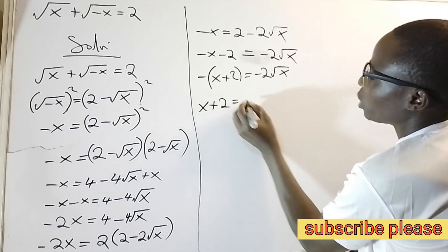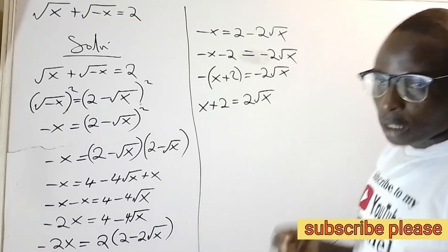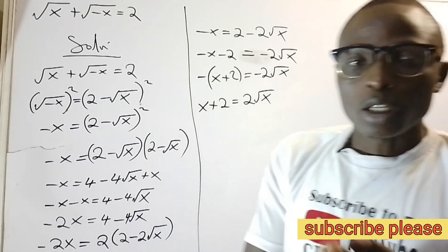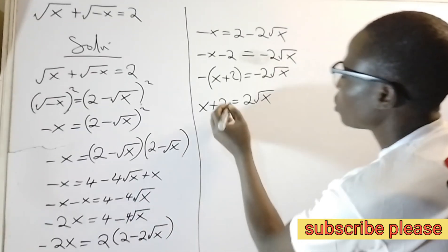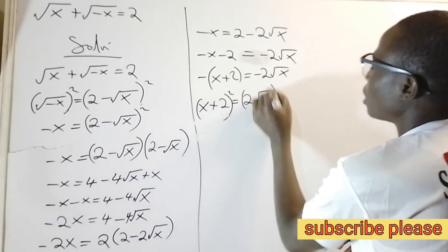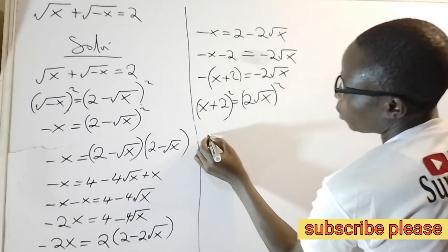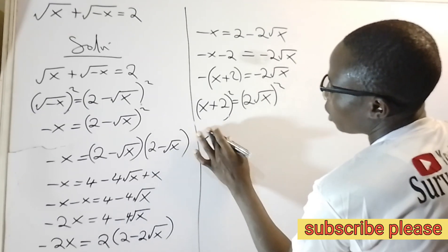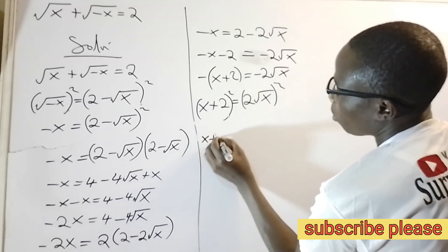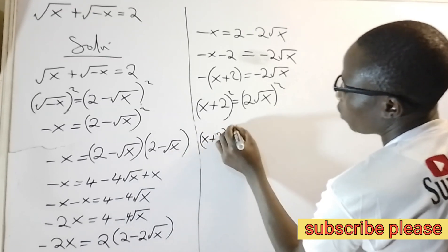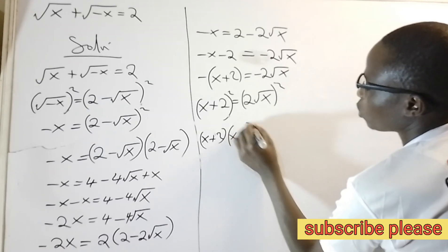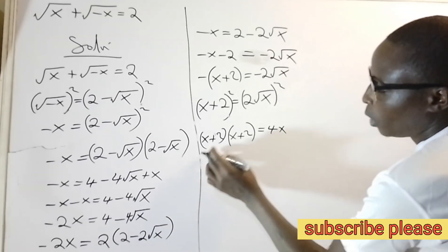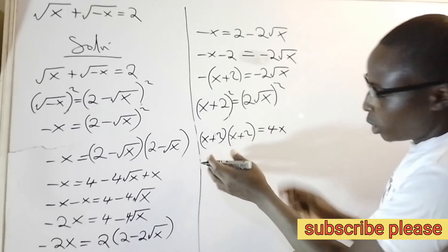Wait — x plus 2 equals root x. In order to get rid of this square root I need to square both sides. Here will be squared and here will also be squared, so I'll have (x plus 2) squared equals x.